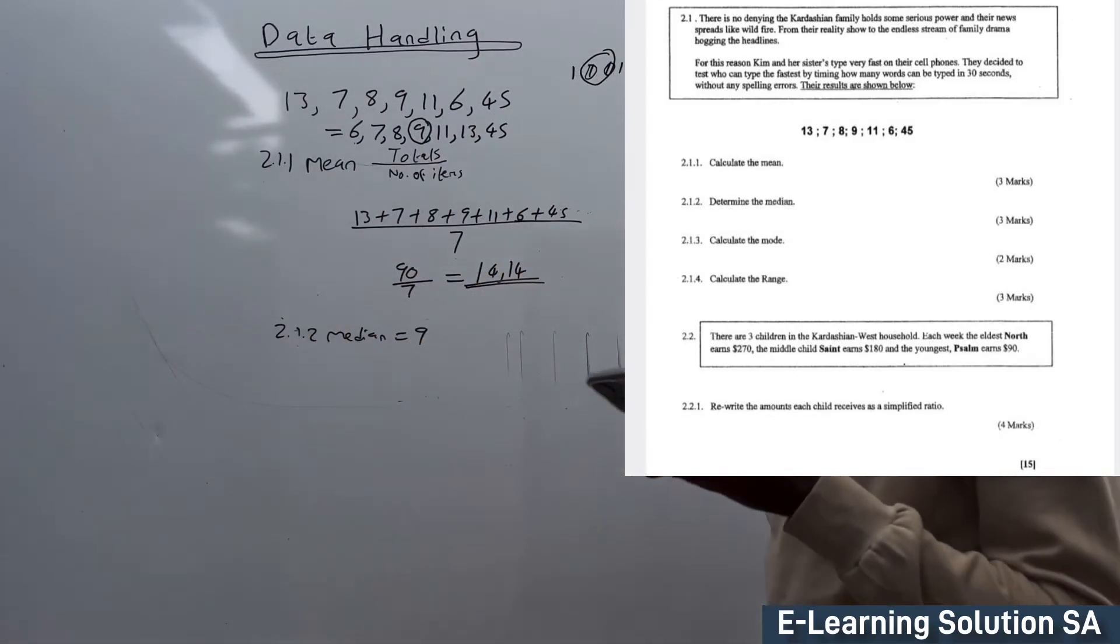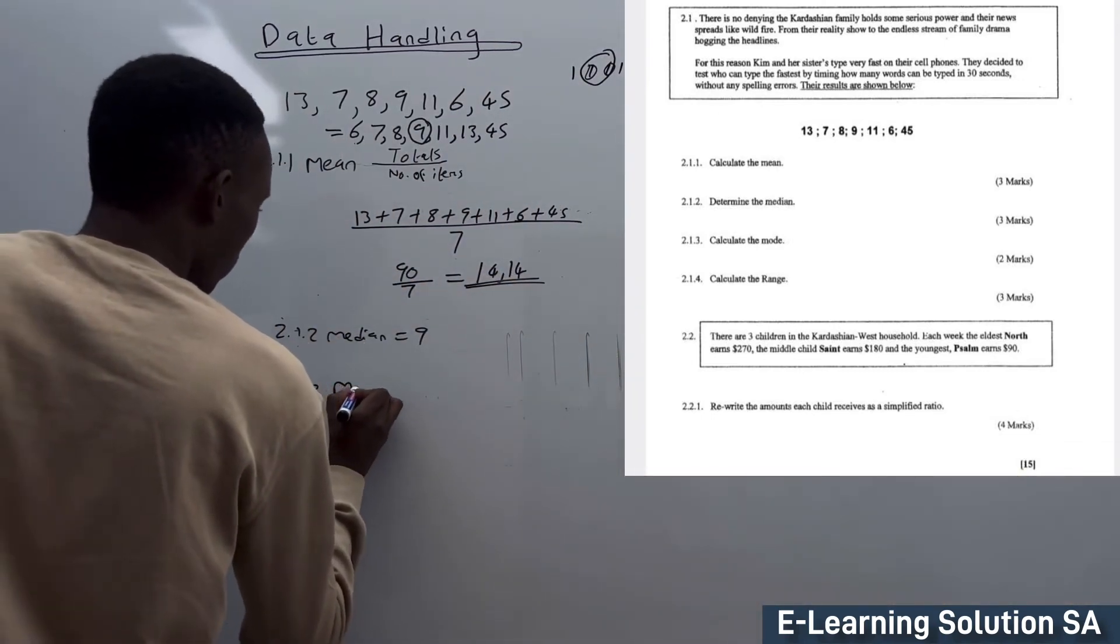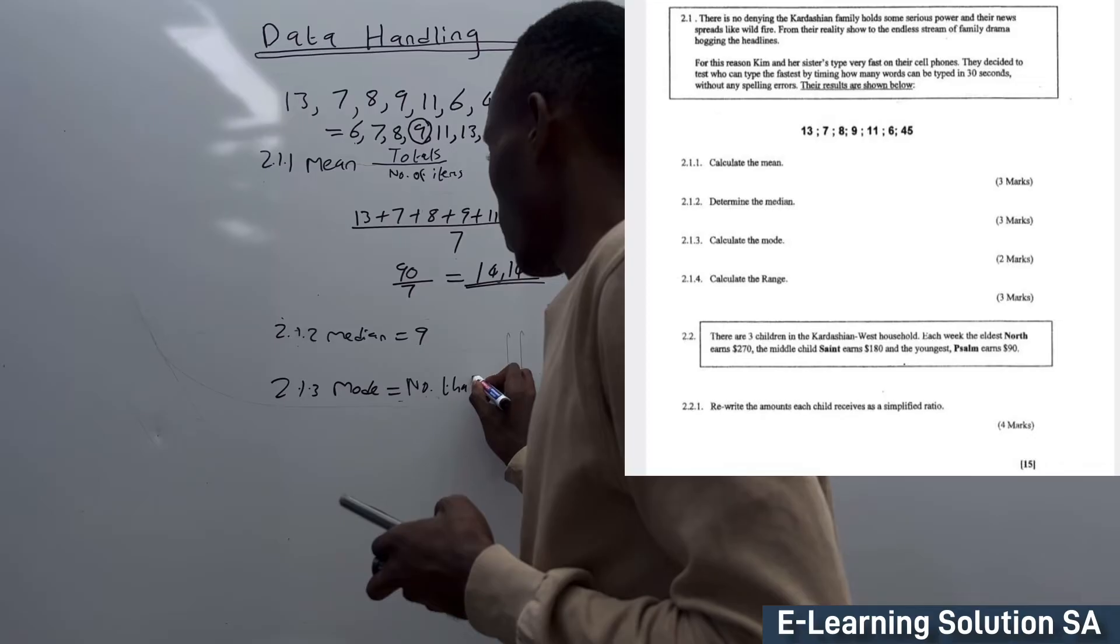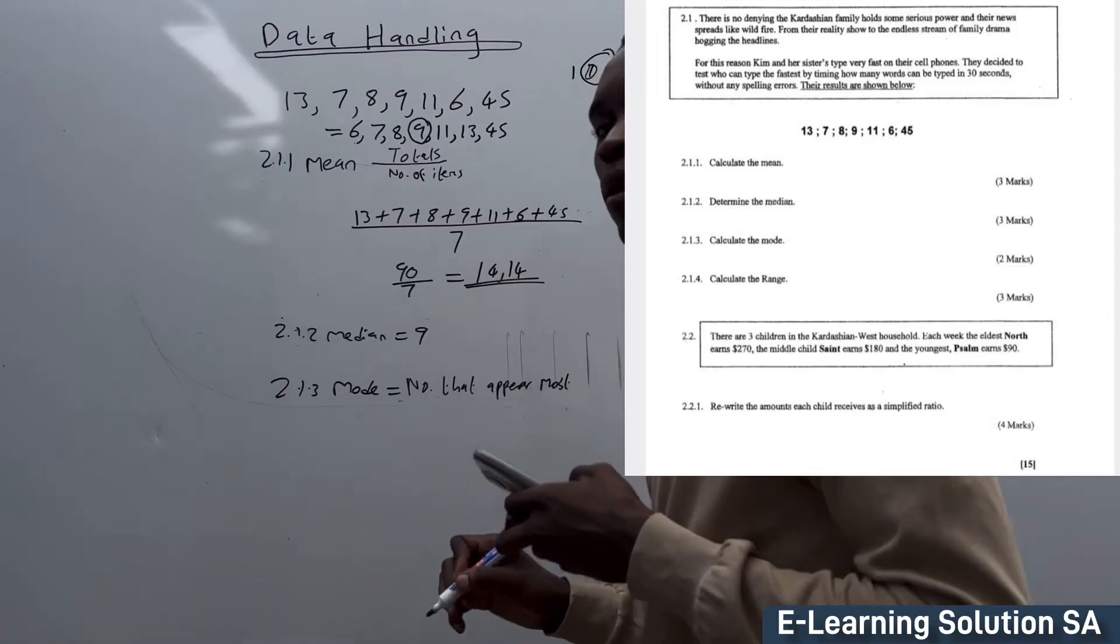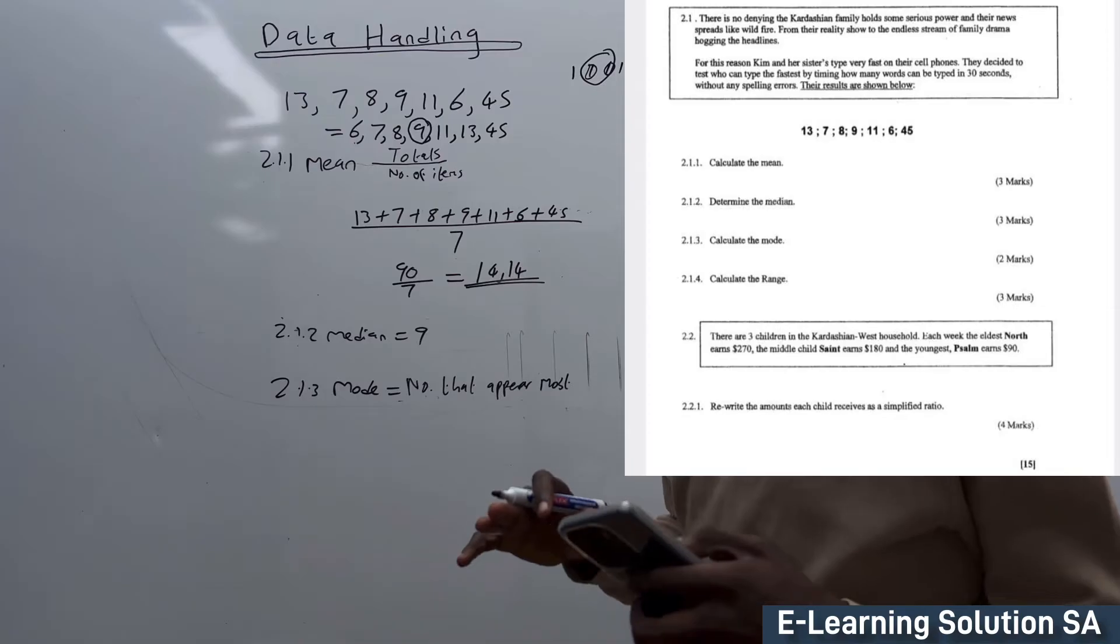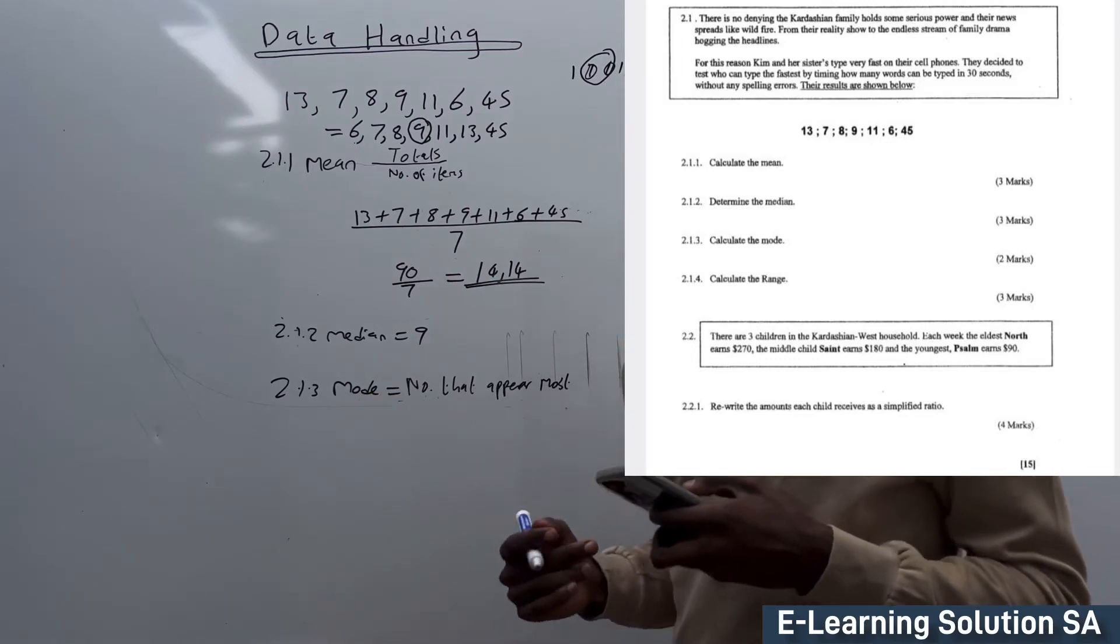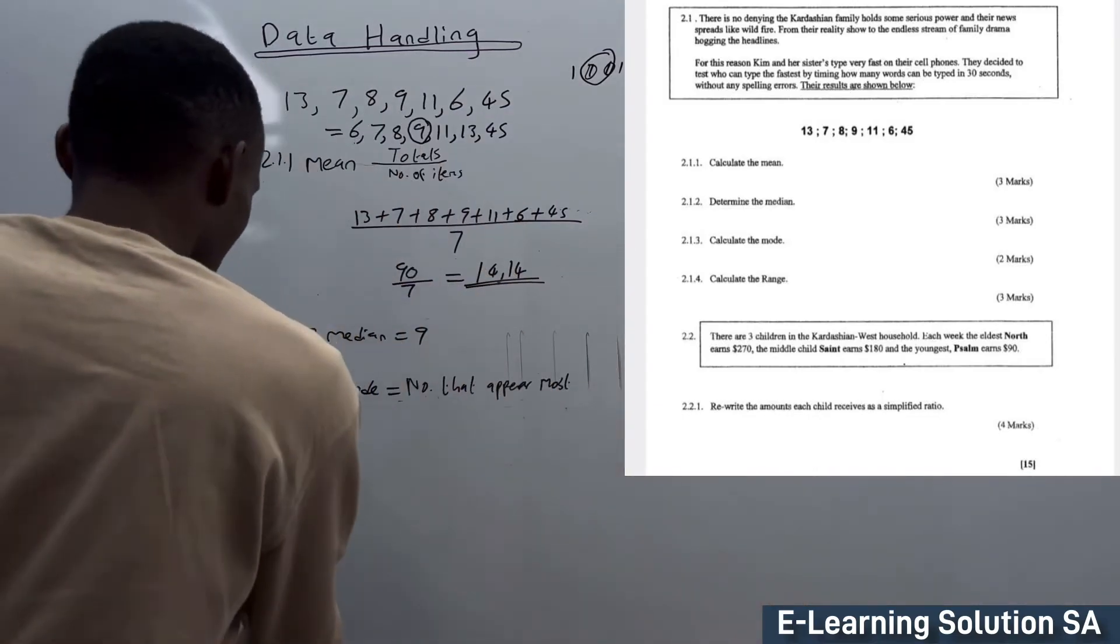2.1.3: Calculate the mode. What is mode? Mode is a number that appears most, the number that appears more than the other numbers. If we check our table, there's no number that is repeated. Because we don't have any repetition of numbers, our answer will be no mode. Two marks for that.